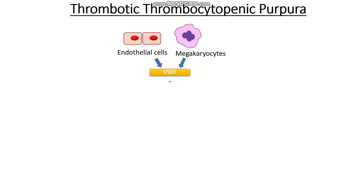Now, how does this link to primary hemostasis or even von Willebrand's disease? Remember to think about that enzyme ADAMTS13. In the normal process we get the production of the volatile von Willebrand factor from our endothelial cells and megakaryocytes, which must be cleaved by ADAMTS13 into the usable form that's not as volatile.